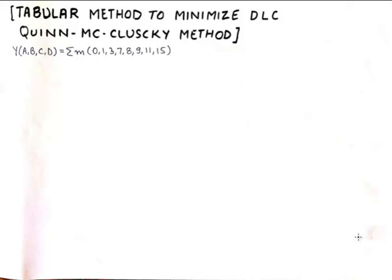If you've watched my previous video, you should be able to solve this question using K-maps. This is a particular case of solving a question using K-maps of four variables — an output that depends upon A, B, C, D inputs — and has minterms 0, 1, 3, 7, 8, 9, 11, and 15.